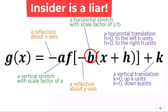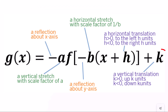Remember, insider is a liar. For h: a horizontal translation — to the left h units when h is positive, to the right h units when h is negative. For k: a vertical translation — up k units when k is positive, down k units when k is negative.